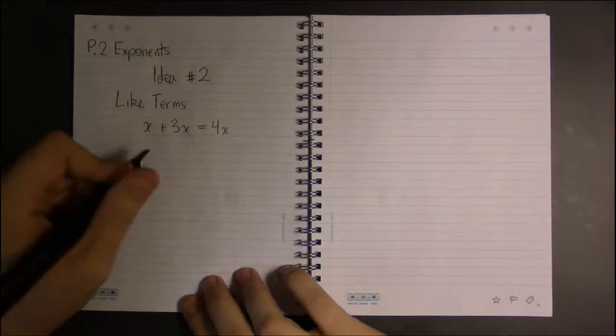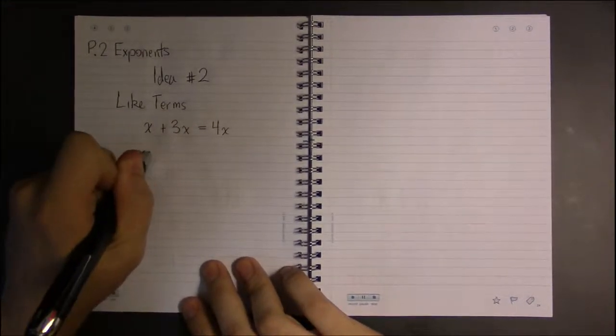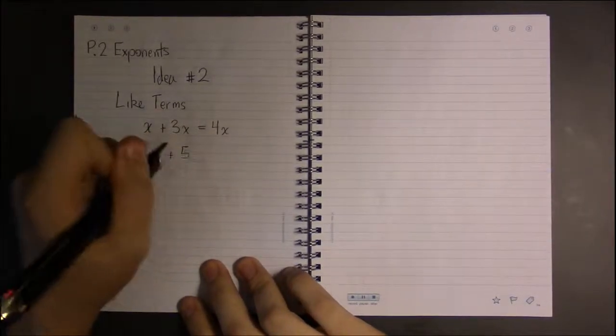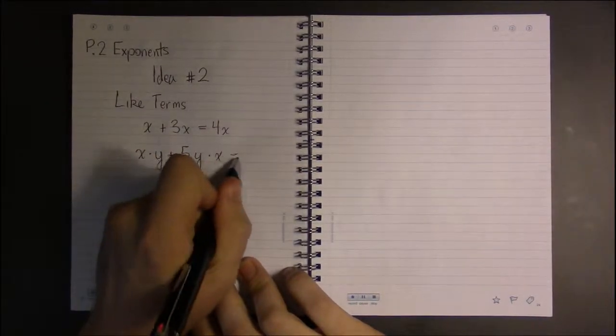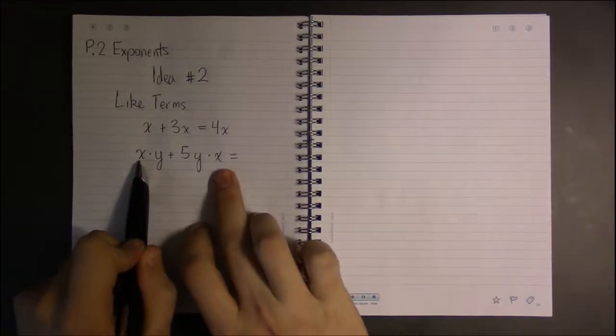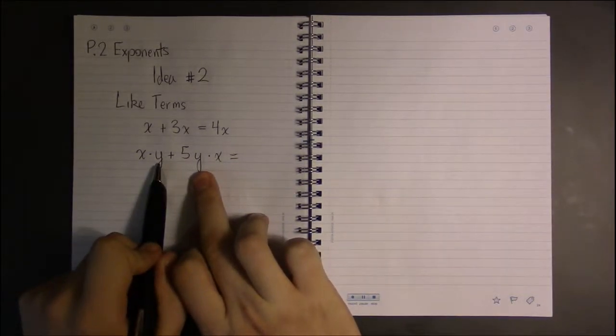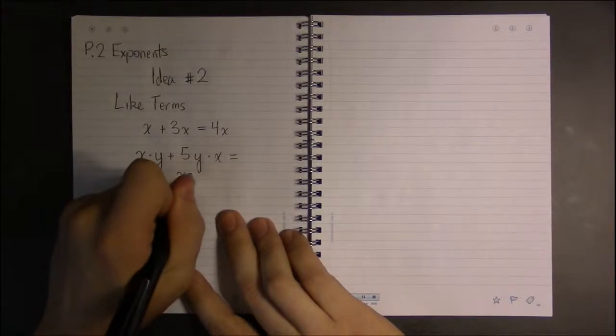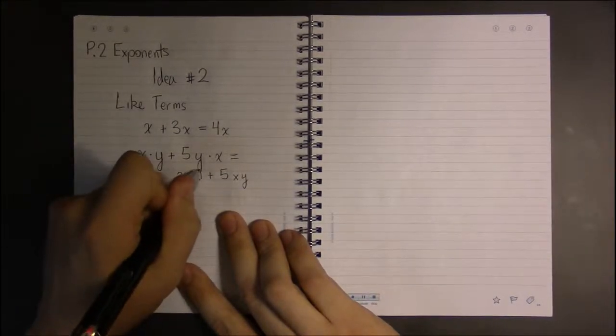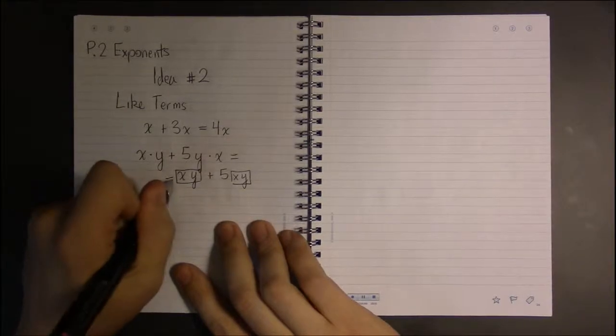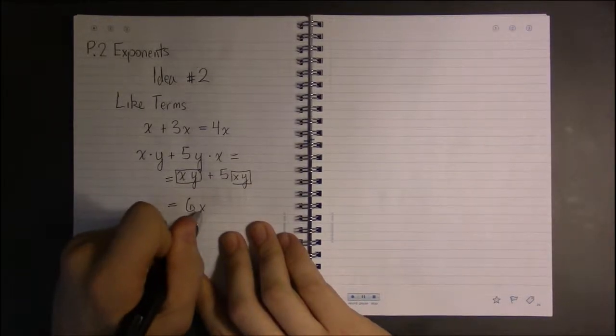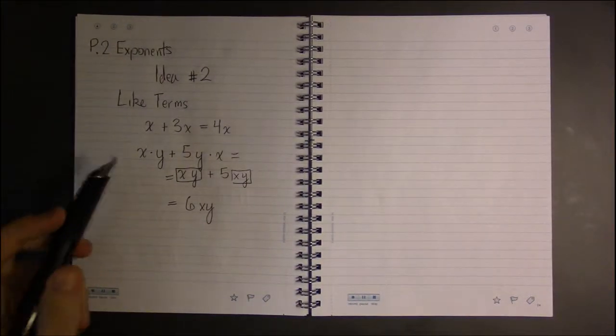Well, you can extend this idea and talk about x times y plus something like 5 times y times x. Here we have the same variables, but we've got products of variables. Since they both contain 1x and they both contain 1y, I can just write it as xy plus 5xy, and this is just like saying x plus 5x.